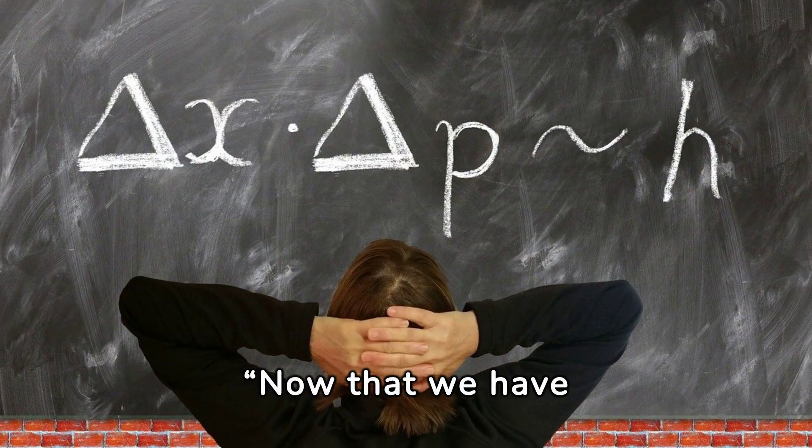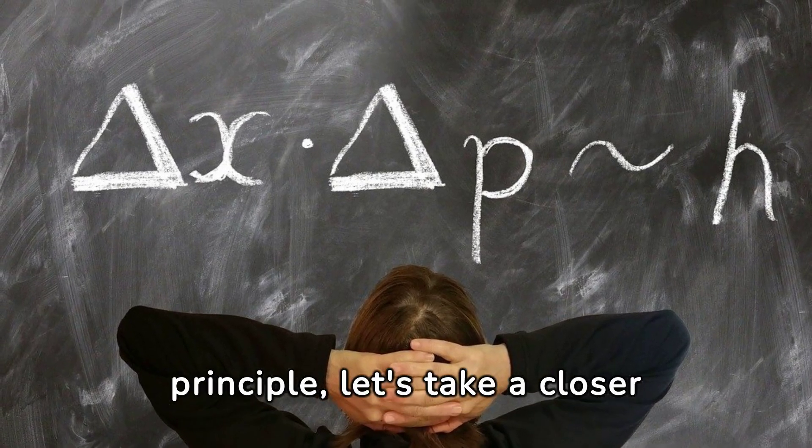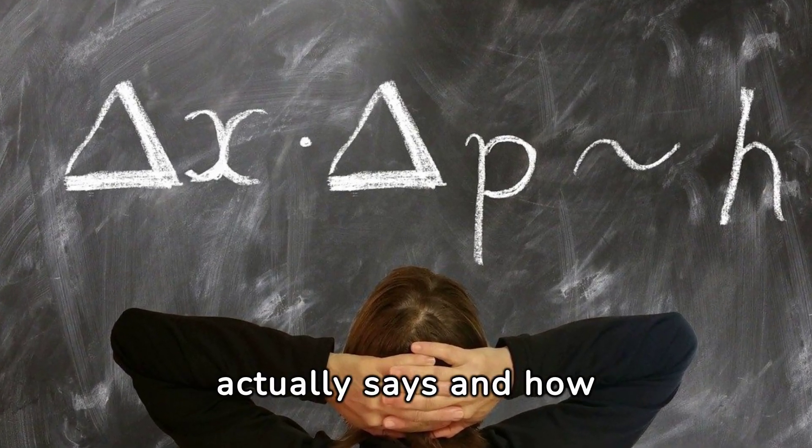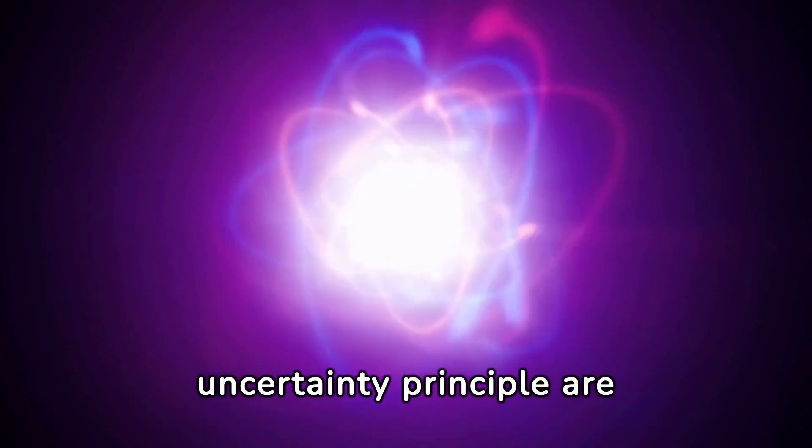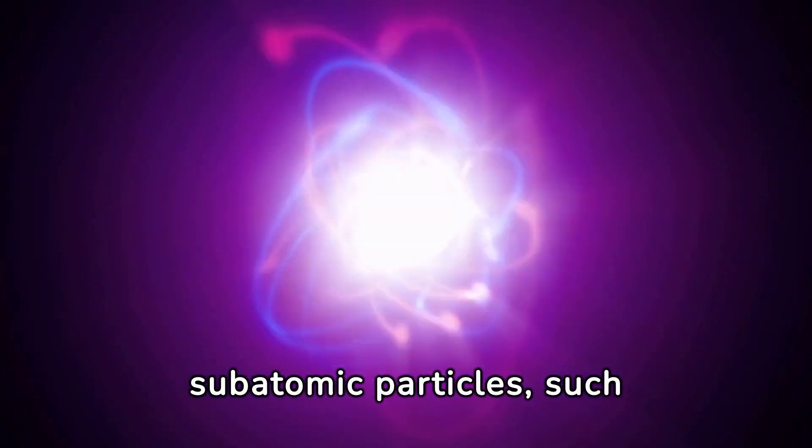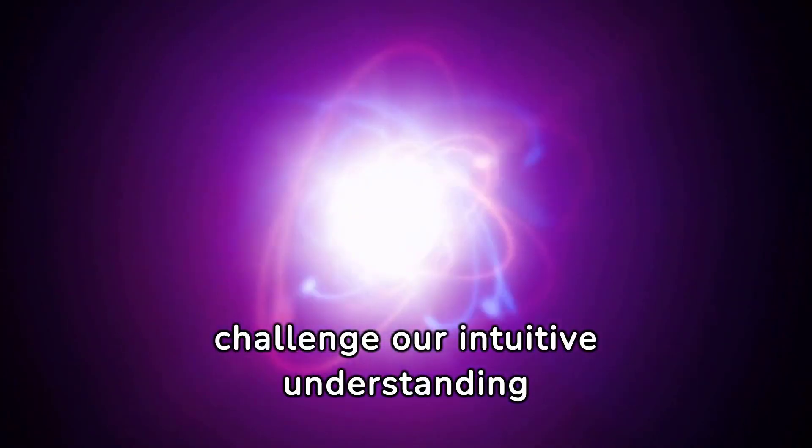Now that we have introduced the idea and history behind the uncertainty principle, let's take a closer look at what this principle actually says, and how Heisenberg arrived at this surprising conclusion. At the heart of Heisenberg's uncertainty principle are subatomic particles, such as electrons.